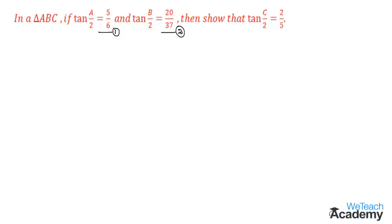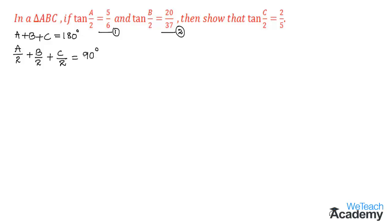We are given the condition that we have a triangle ABC. In triangle ABC, we already know that A plus B plus C equals 180 degrees. Since we have tan(A/2), let us divide this equation by 2 on both sides. Dividing, we get A/2 plus B/2 plus C/2 equals 90 degrees. Transferring C/2 to the right-hand side, we get A/2 plus B/2 equals 90 degrees minus C/2.